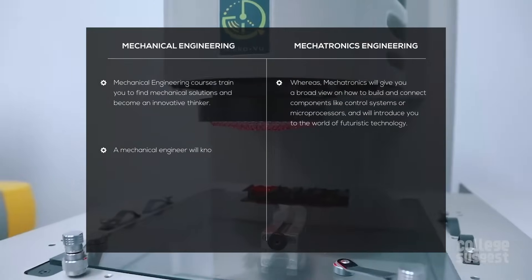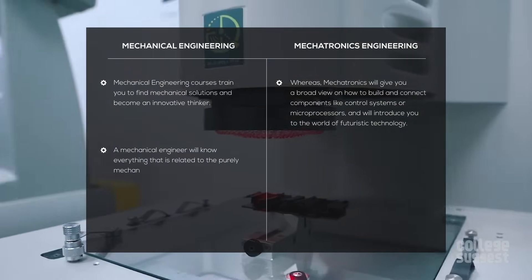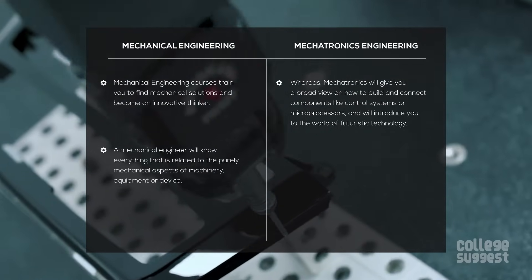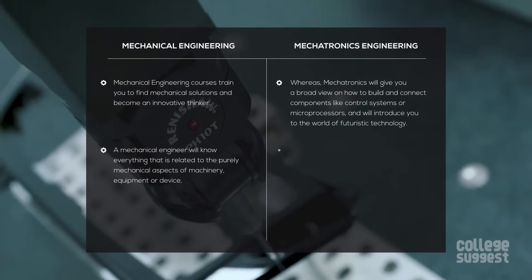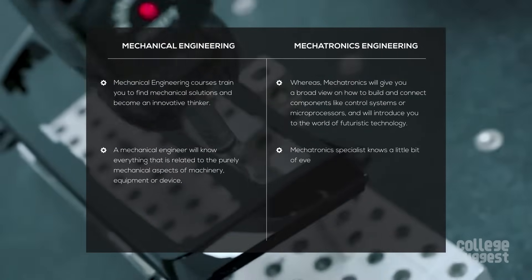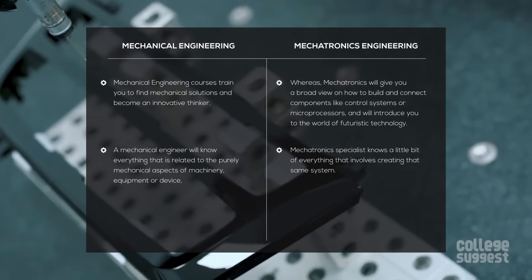As a mechanical engineer, you will know everything that is related to the purely mechanical aspects of machinery, equipment or device, while a mechatronics specialist knows a little bit of everything that involves creating that same system.